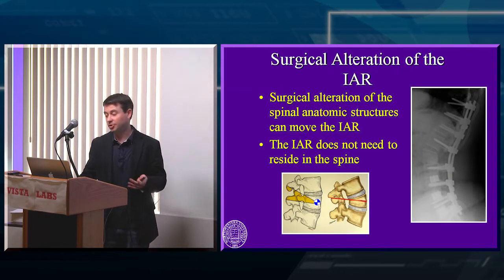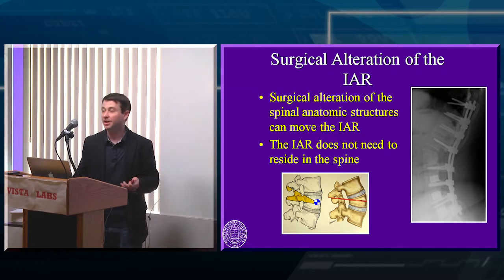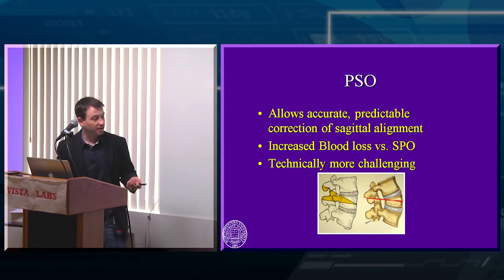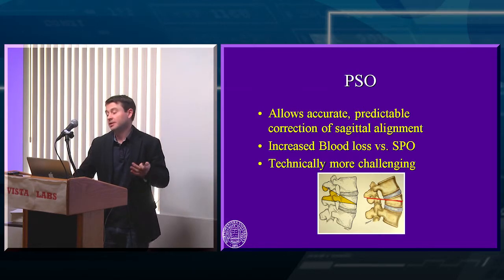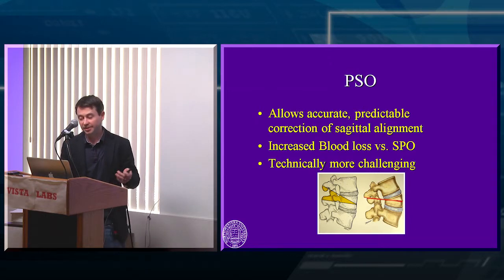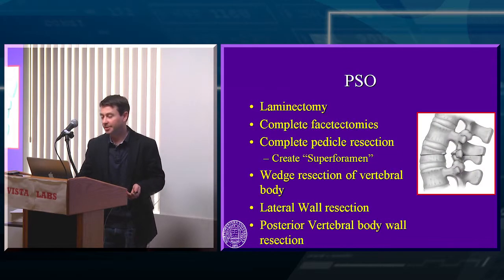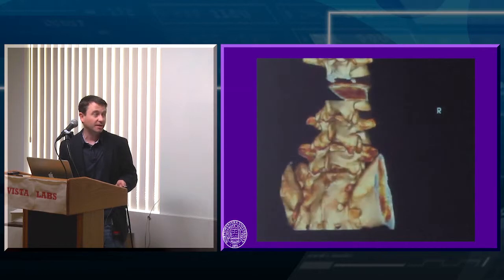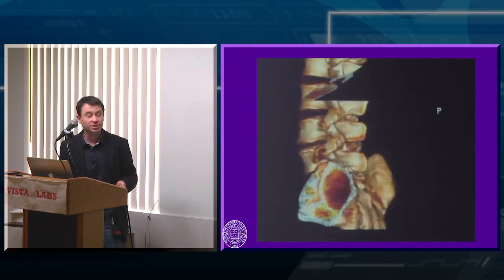When you correct the spine you're going to make your own axis of rotation — which is exactly what a pedicle subtraction osteotomy is: creating a point at the front of the spine around which you rotate. We did one in the lab yesterday. You make that apex at the front of the spine, and at the end it should look just like this — pivoting on the anterior cortex as your axis of rotation.